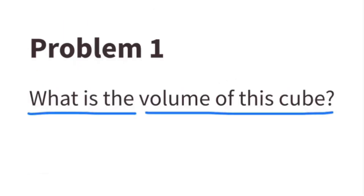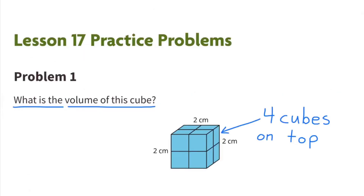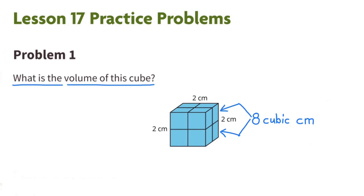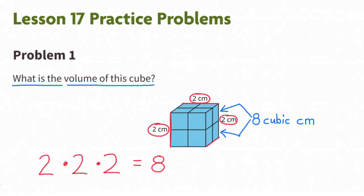Number 1. What is the volume of this cube? There are four cubes on top and four cubes on the bottom for a total of eight cubes. The volume is eight cubic centimeters. A cube is three-dimensional. This cube is two centimeters tall, two centimeters wide, and two centimeters long. Two times two times two equals eight. The volume of this cube is eight centimeters cubed, or eight centimeters to the power of three.